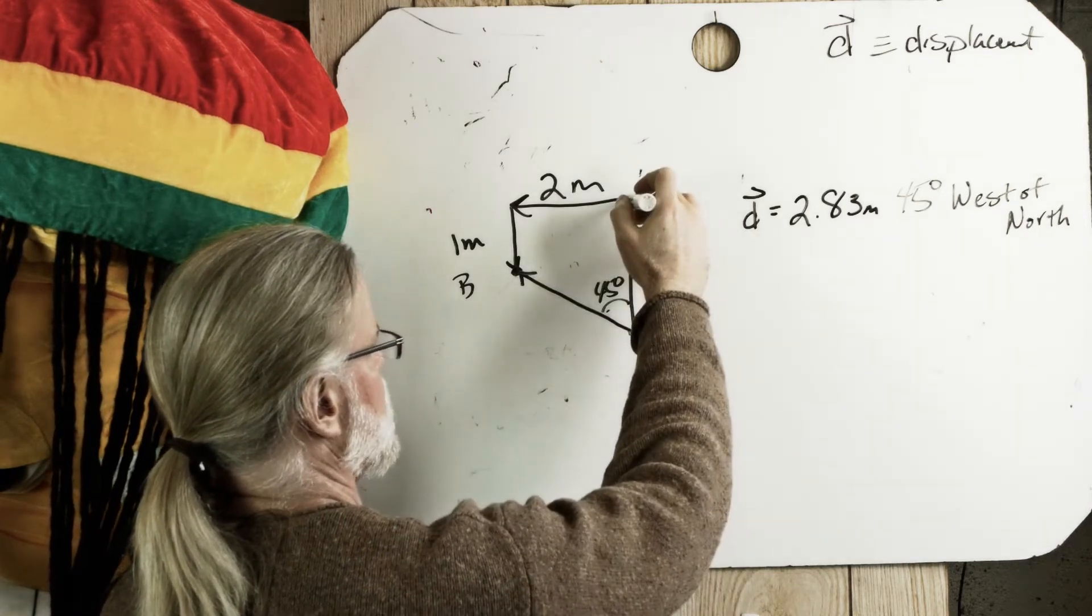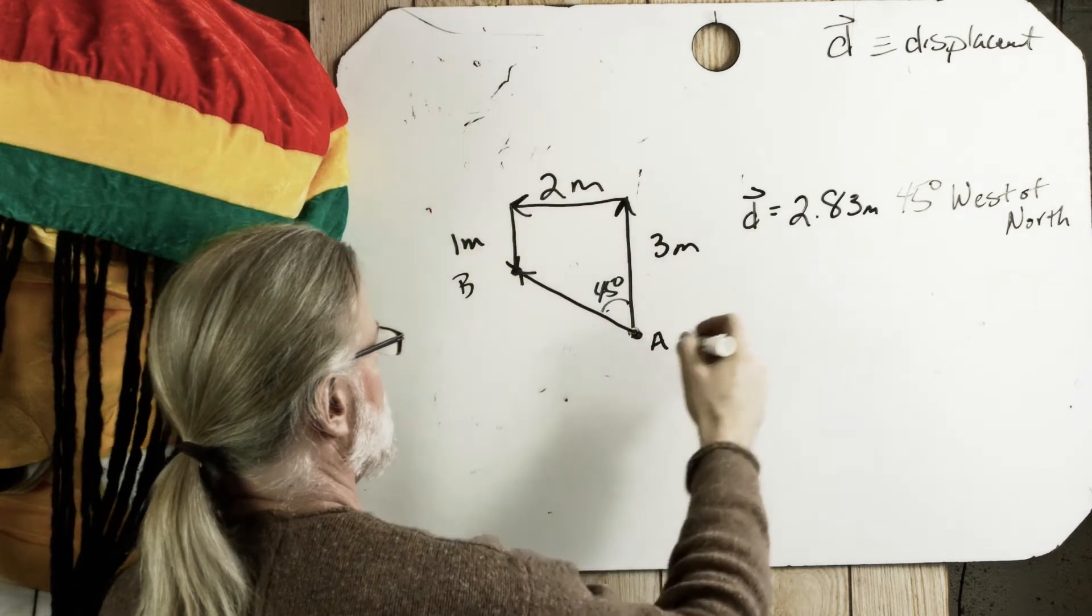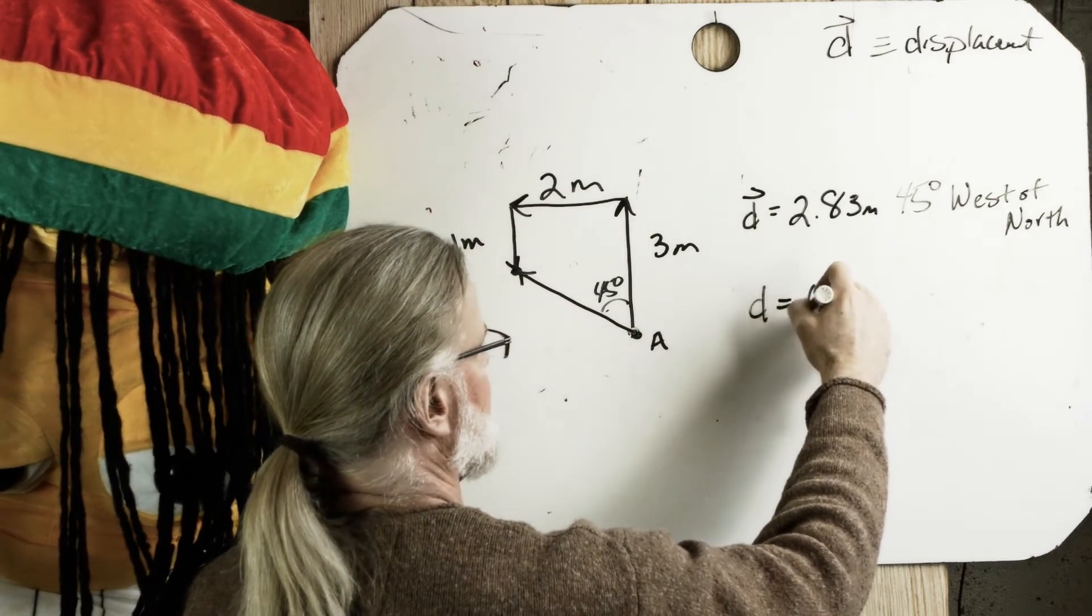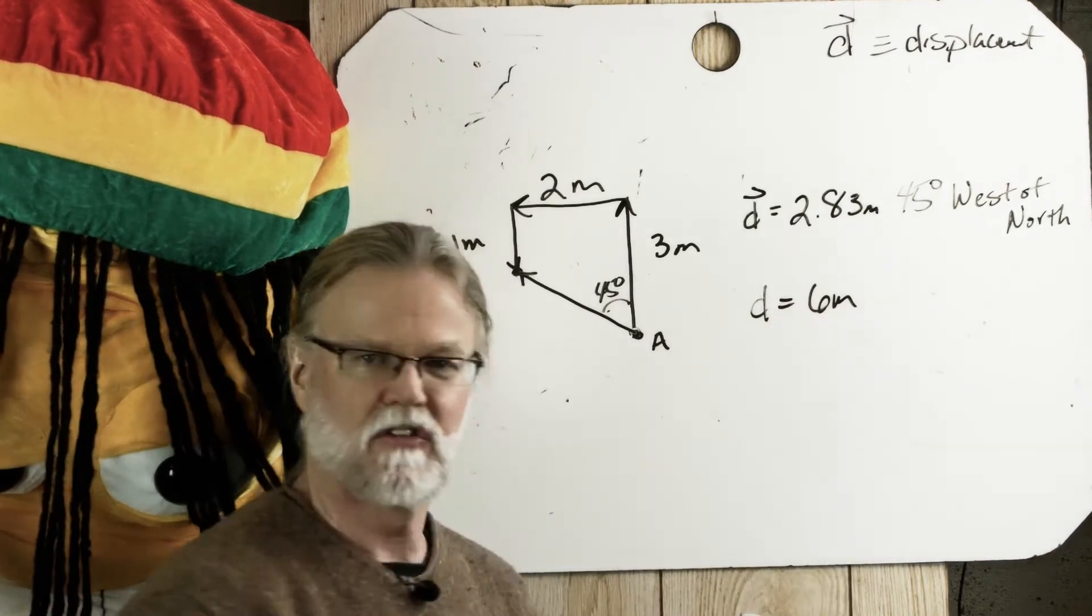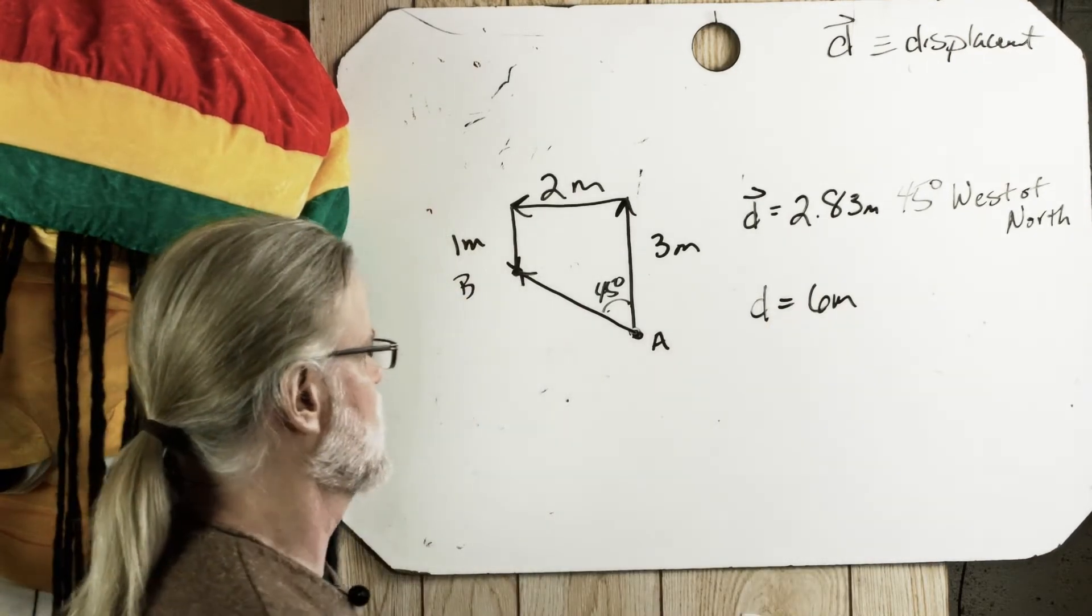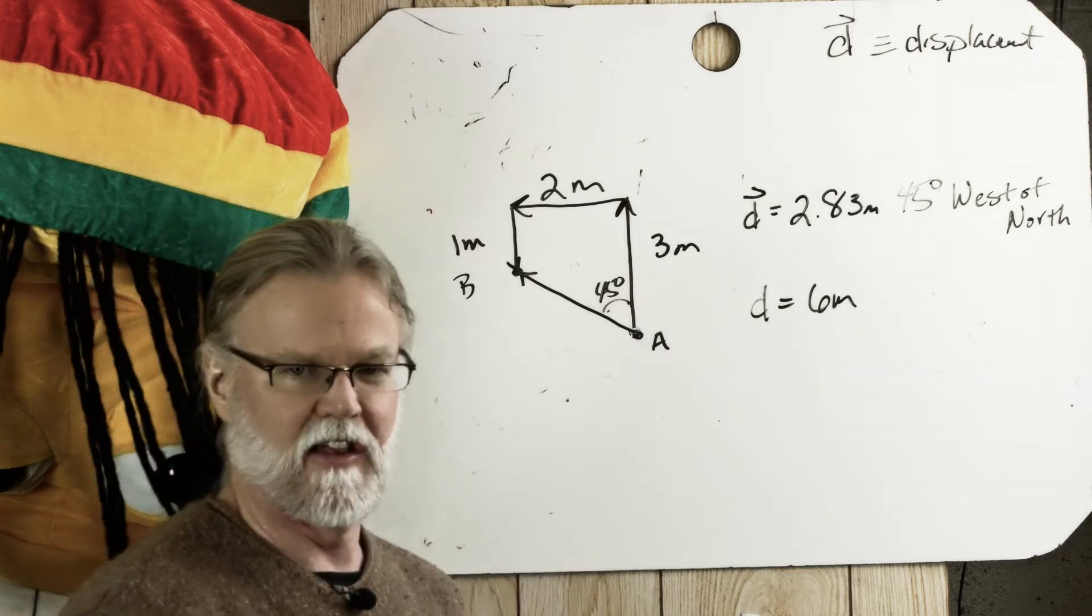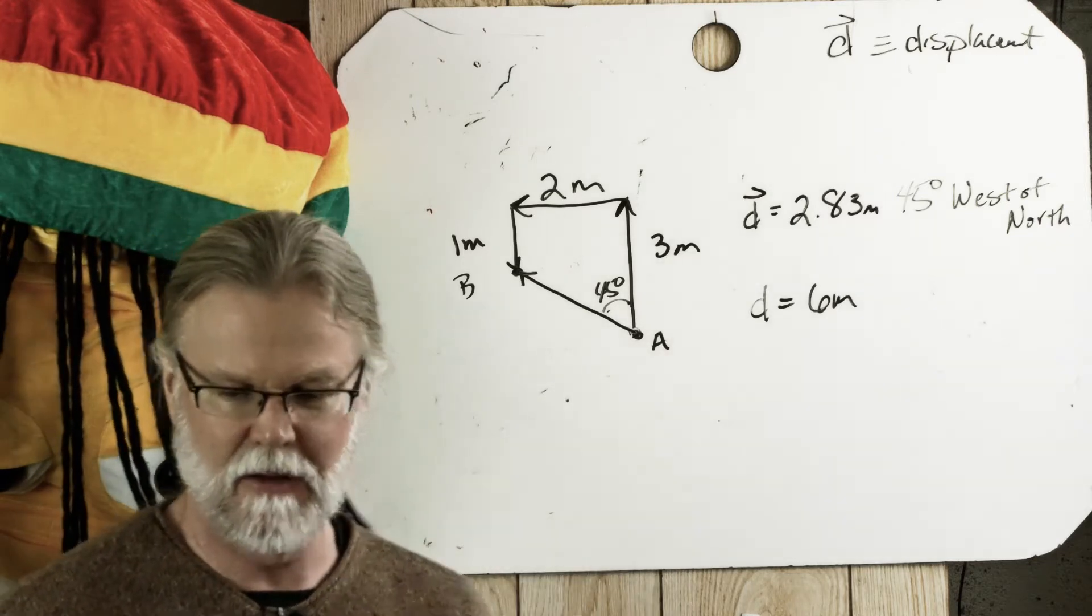So she went three meters north, then two meters, then one. So actually, the distance she traveled was actually six meters. So she traveled six meters distance. Distance is a scalar. Sometimes we want distance, sometimes we want displacement.